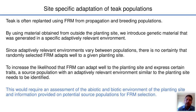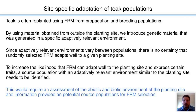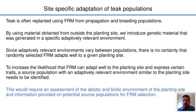Teak is however often replanted using material from propagation and breeding populations. By using material obtained from outside the planting site, we introduce genetic material that was generated in a specific adaptively relevant environment. Since adaptively relevant environments vary between populations, there is no certainty that randomly selected material will adapt well to a given planting site. To increase the likelihood that material can adapt well, a source population with an adaptively relevant environment similar to the planting site needs to be identified.